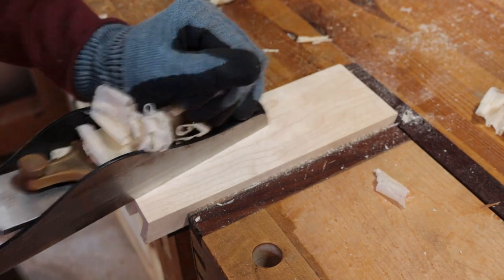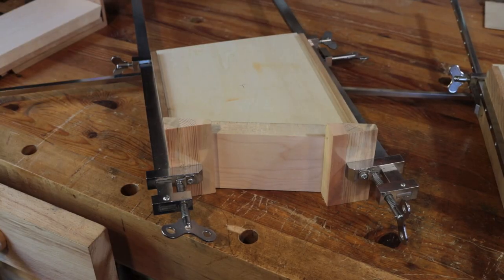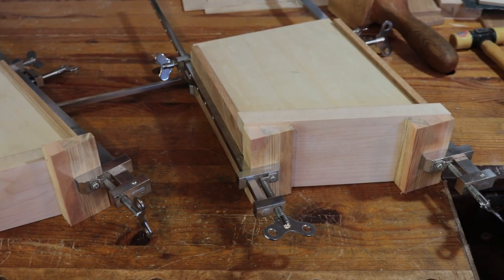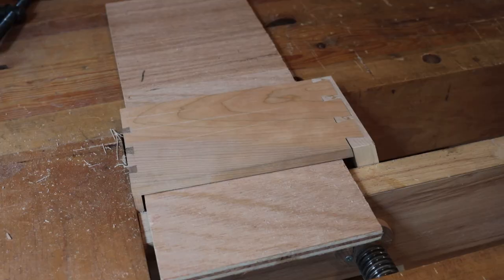I then used a low angle bevel up plane to smooth out the front of the drawers because this is hard maple and it was kind of difficult to plane. And then I glued everything up using cauls that were cut on the same angle as the front of the drawers.